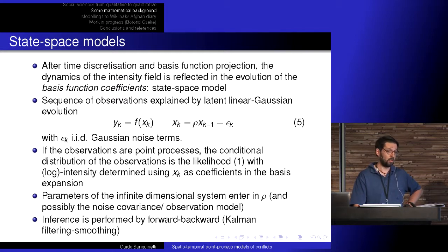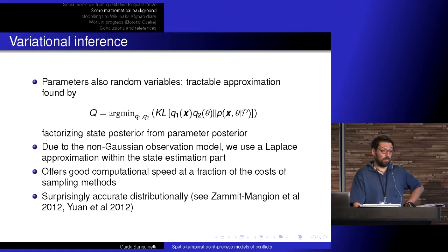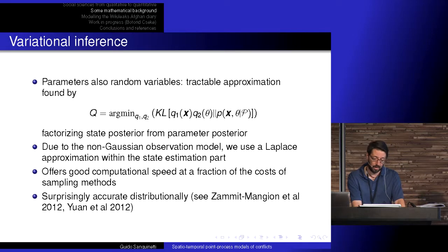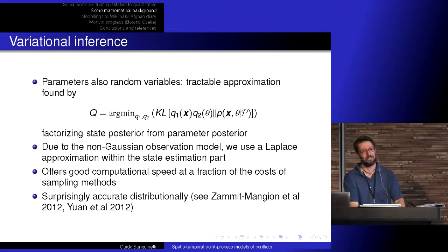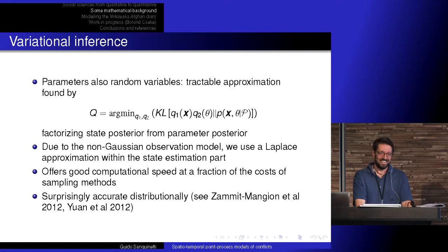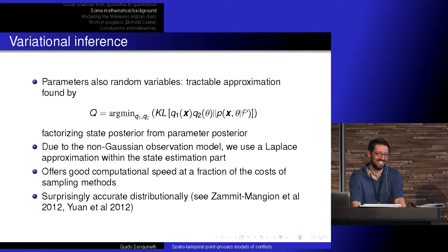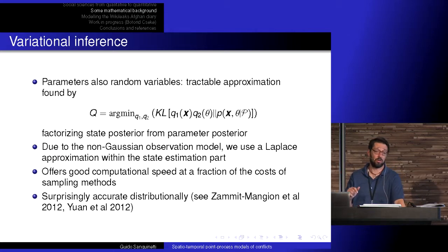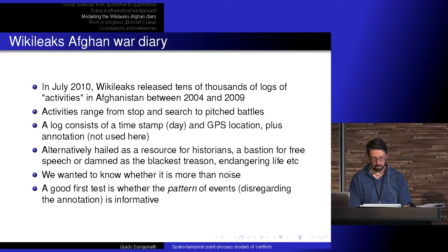That's not a big problem — we have good methods to handle these in engineering. For inference we perform variational inference, and we are interested in reporting uncertainties over the parameters because they are interpretable. We used a variational approximation where we factorized the posterior with a structured approximating posterior, keeping the dynamics and a posterior over the parameters. Now, the data and the problem: making a model of the WikiLeaks dataset describing the Afghan War. This is a fairly large dataset — about 70,000 points, each annotated with a timestamp and GPS position.